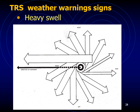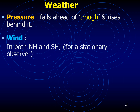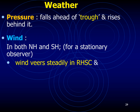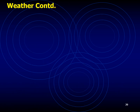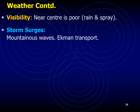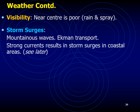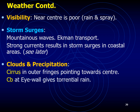Other warning signs include, in the open sea, a swell from the direction of the storm center, and pressure that falls ahead of the trough and rises behind it. In both hemispheres, for a stationary observer, wind veers steadily in the right-hand semicircle and backs steadily in the left-hand semicircle. The angle of indraft at outer fringes is about 45 degrees, gradually decreasing to zero degrees in the eye wall. Visibility near the center is poor with heavy rain and spray, and storm surges — mountainous waves — can be noted due to Ekman transport. Cirrus clouds in outer fringes point towards the center, and cumulonimbus clouds are formed at the eye wall giving torrential rain.